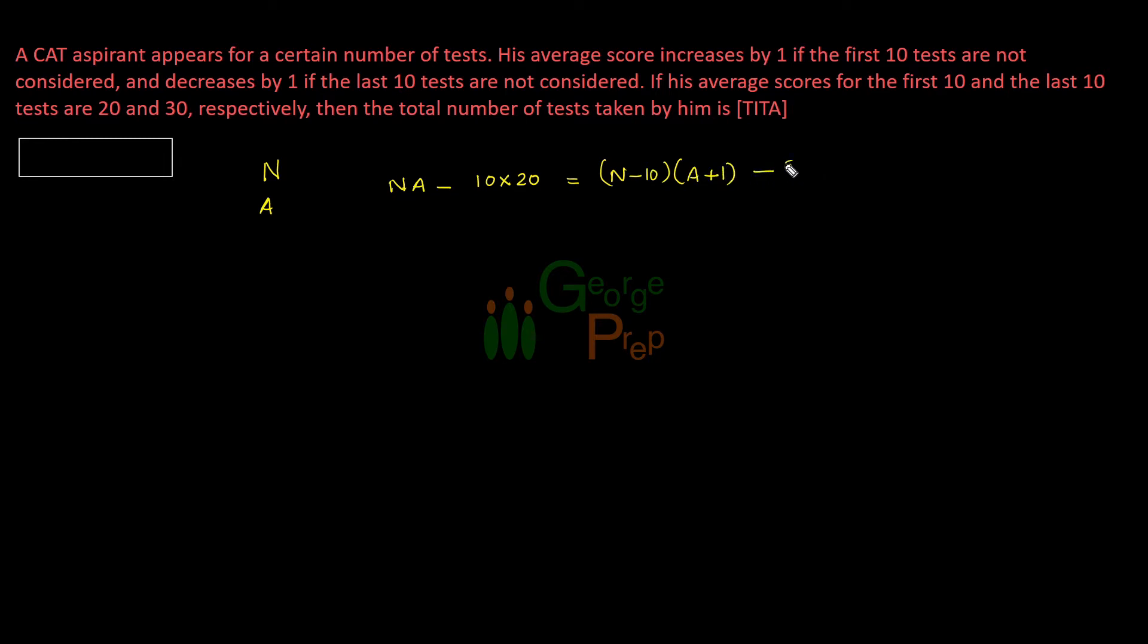In the second scenario, again we start with NA as the initial sum. From that we don't consider his marks of last 10 tests. The number of tests is 10 and across those 10 tests his average is 30. So we don't consider this 300 marks.